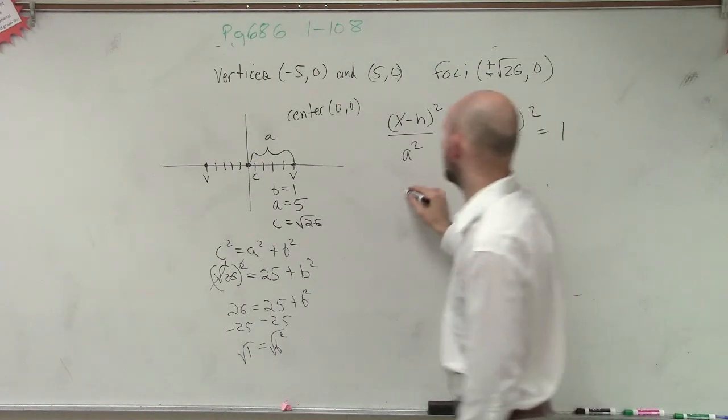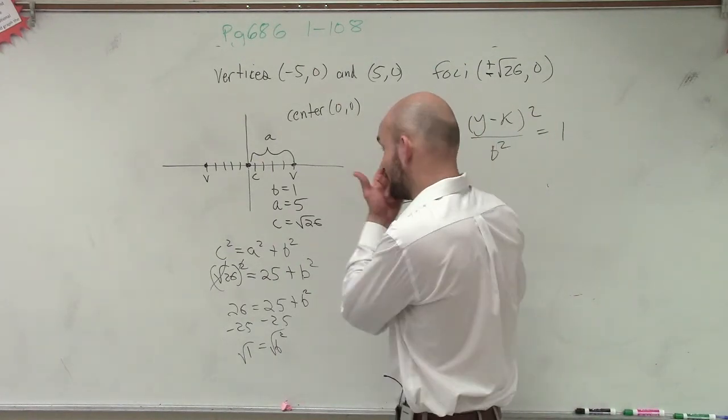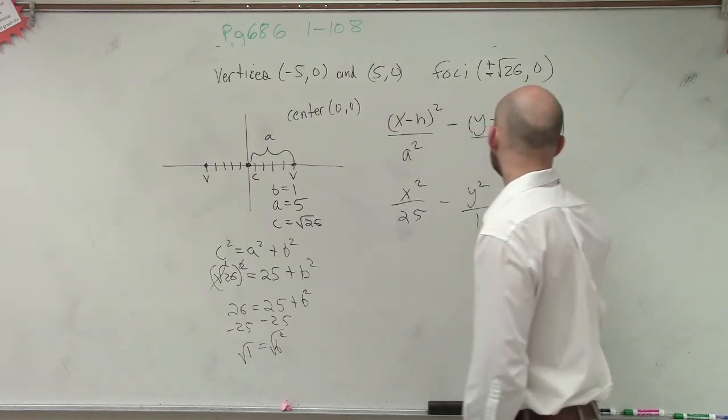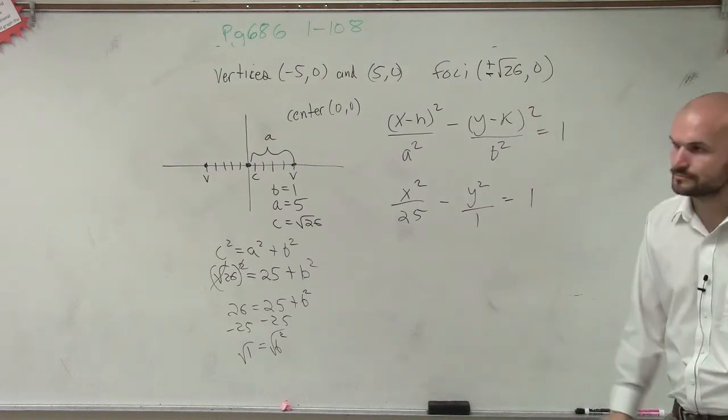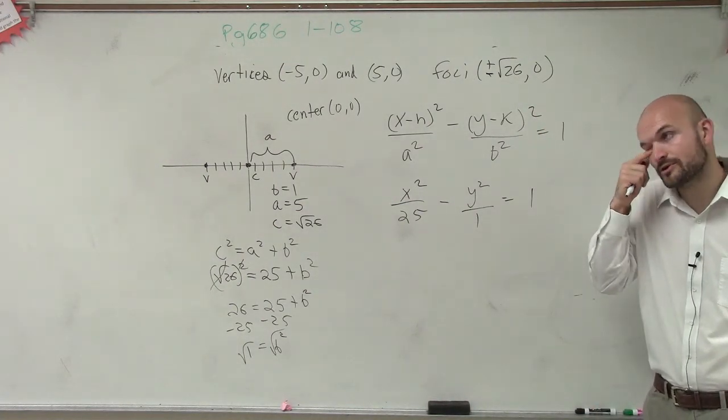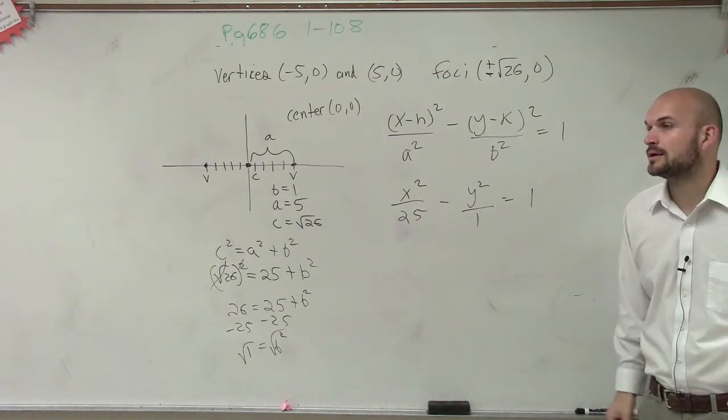Yes? OK. So I can write x squared over a squared, which is 25, minus y squared over 1 equals 1. And then you don't need to really write the over 1 either, but to help you see where it's at.